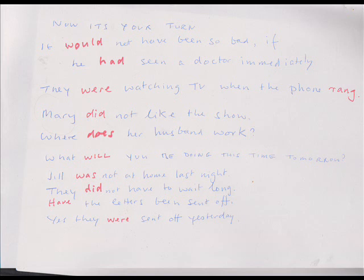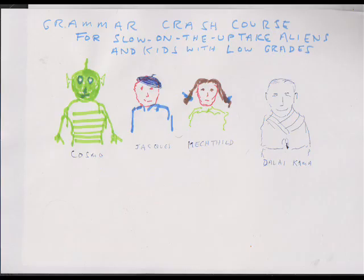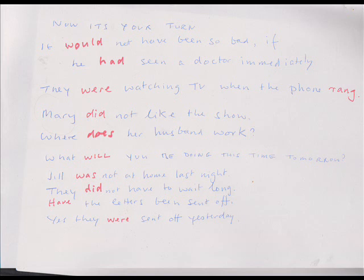'Jill was not at home last night.' — Mechthild? It is not past progressive because there is no -ing. It is simple past of 'to be' — past simple. 'Did' — we all know that: past simple. 'Did' is automatically past simple. 'Have the letters been sent off?' — the venerable Dalai Kama? 'Have' is the red verb, present; combined with the past participle — that is present perfect. But 'sent off' — past participle after a form of 'be' is passive. So that is present perfect in the passive. Good. Mechthild: 'Sind die Briefe abgeschickt worden?' Thank you very much.